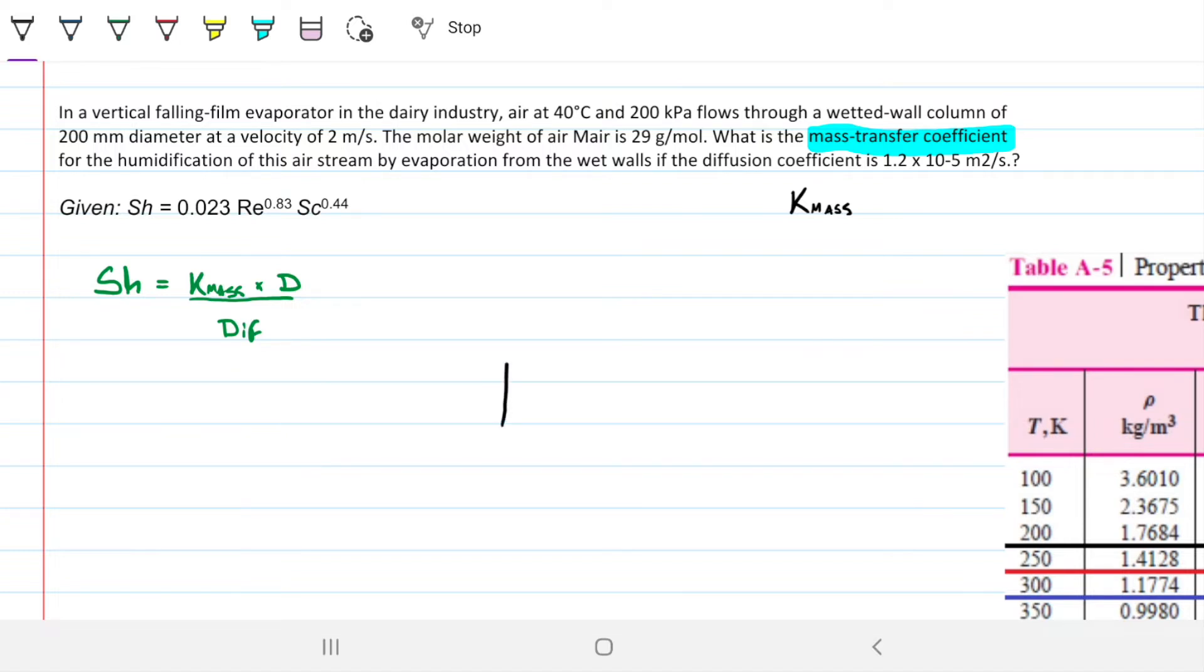What do we have here? We have a falling film evaporator. Let's try to draw that. Let's do a simplified falling film evaporator. We have probably milk coming down the side of the walls, and we have air that is removing probably water molecules from that milk or whatever product from the dairy industry. It's trying to remove some of the water from the dairy and take that into the air.